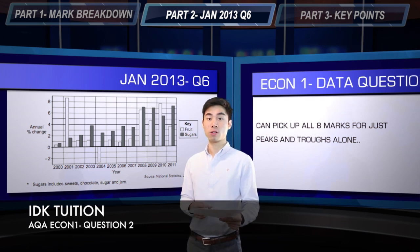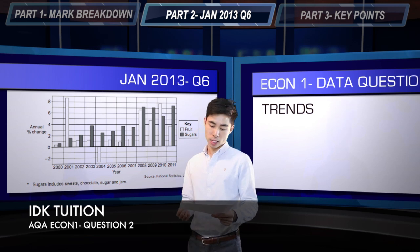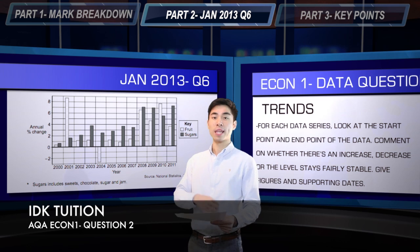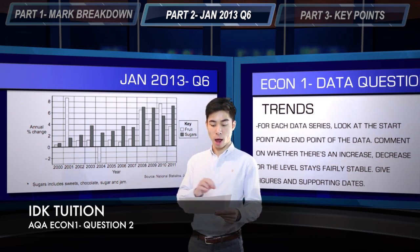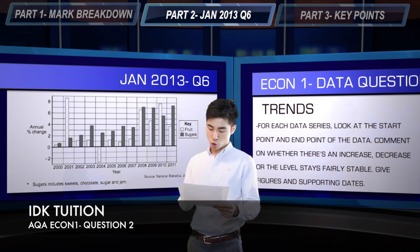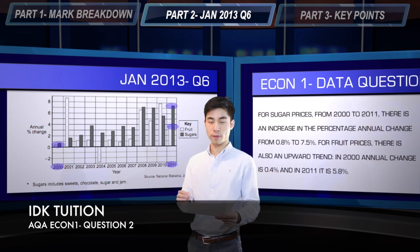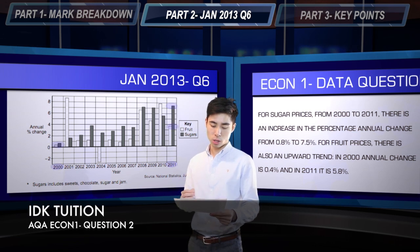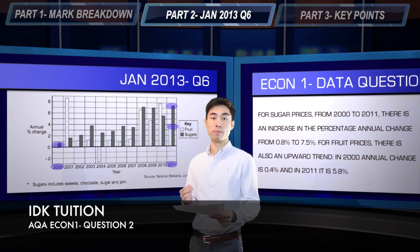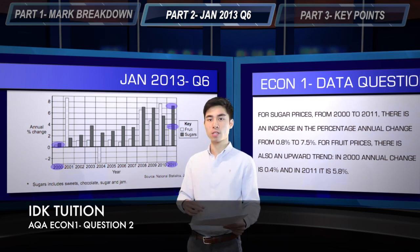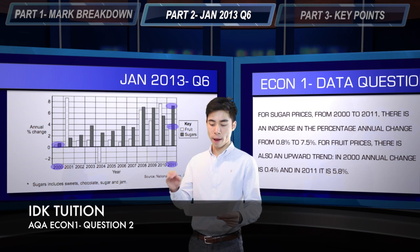Your next point of comparison is trends — again very easy. All you're going to do for each data series is take the start and the end of the series and simply say whether there's an increase, a decrease, or whether the trend is fairly stable. For sugars — the easiest one to note — you can see very clearly that from 2000 to 2011 there was an increase in the percentage annual change: starting in 2000 at only 0.8%, rising to 7.5% in 2011. Two dates, two figures — that indicates the trend of the data.